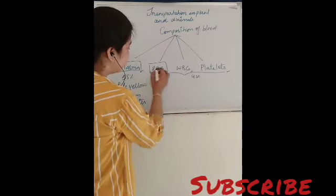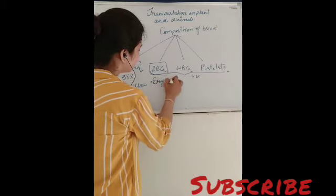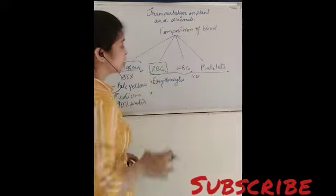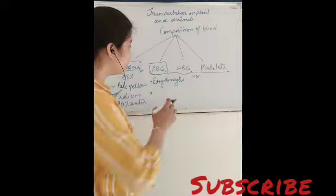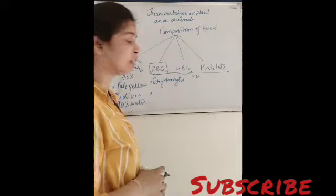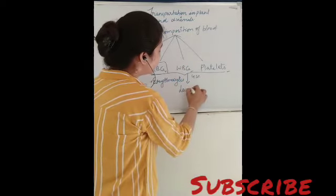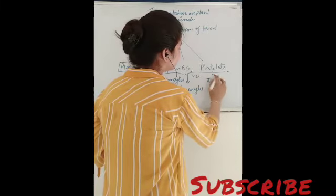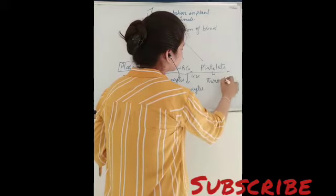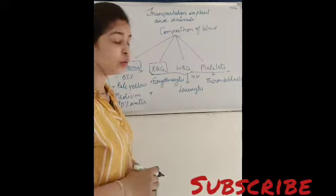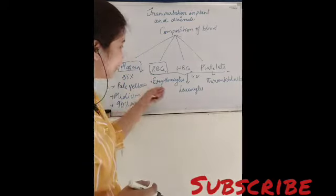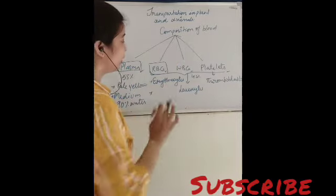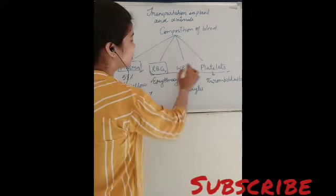RBCs are also known as erythrocytes, or red blood cells. WBCs are also known as leukocytes. And platelets are known as thrombocytes. So these are the alternative names of RBCs, WBCs, and platelets. This is the main composition of blood — blood is composed of blood plasma, RBCs, WBCs, and platelets.